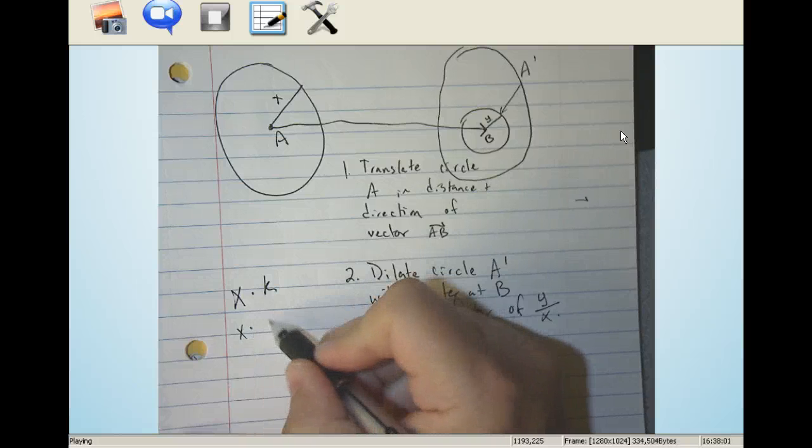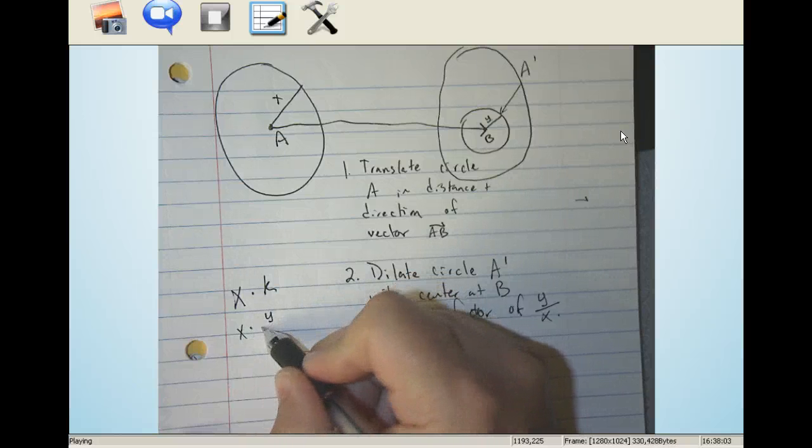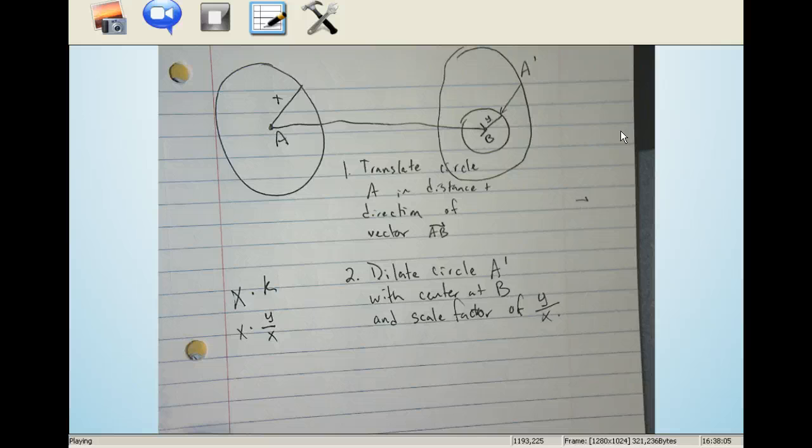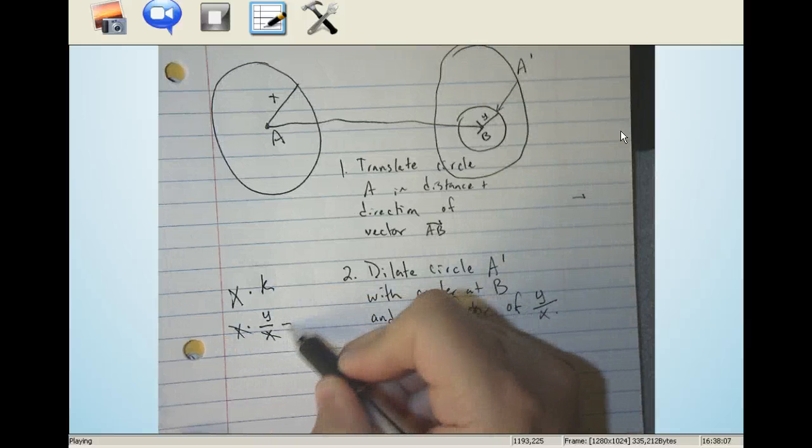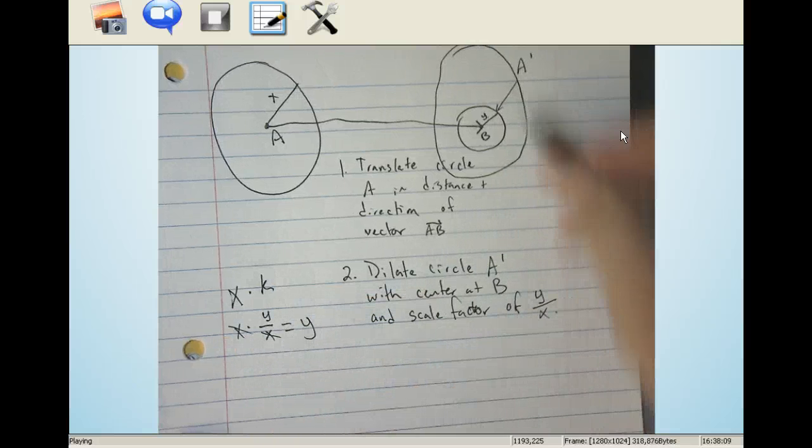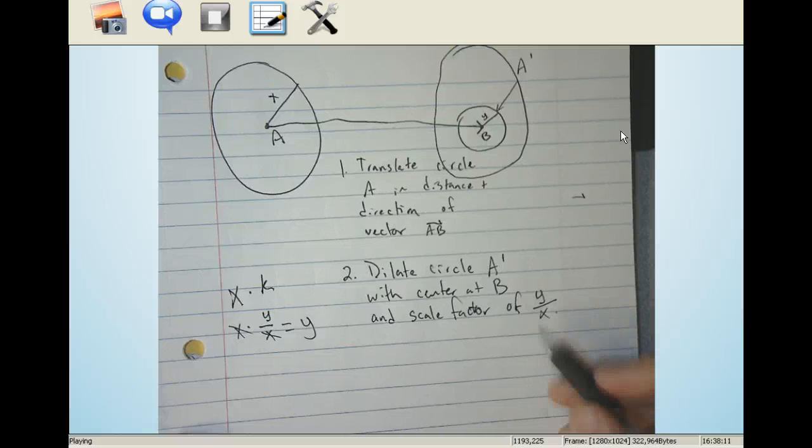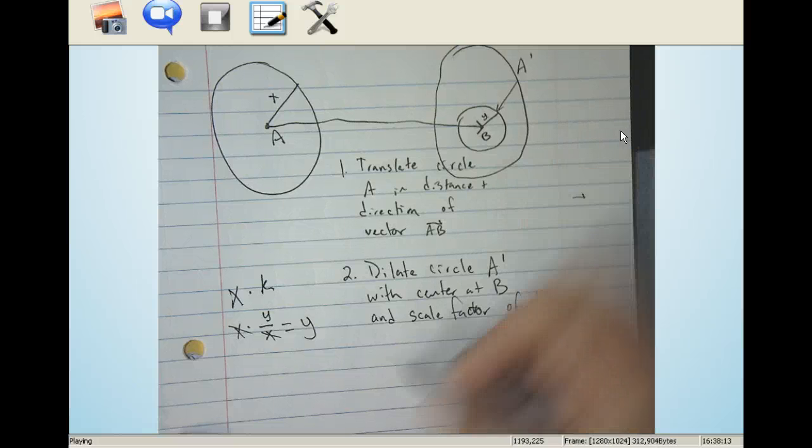And what happens when we do that multiplication is the X is cancelled and the new measurement is Y. So we would have now a new circle, A double prime.